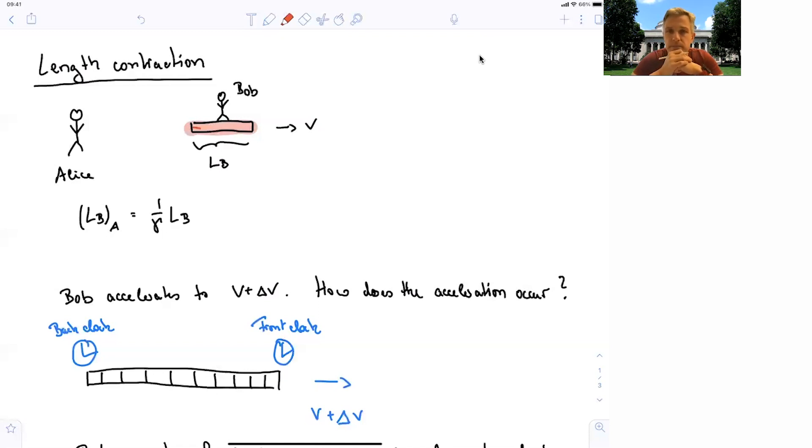So now, what happens now if Bob accelerates from his velocity V to a velocity V plus delta V with respect to Alice? How does the acceleration occur? And how can we understand then the further shrinking of the spacecraft?